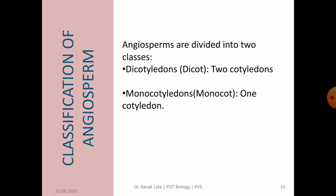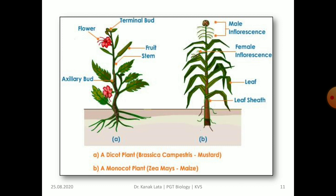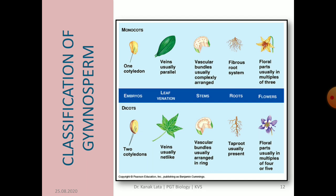Now it is about classification of angiosperms. Angiosperms are divided into two classes: dicotyledons, also called dicots, and monocotyledons, also called monocots. This classification is based on the number of cotyledons — in monocots it is one cotyledon and in dicots it is two cotyledons. In monocots, veins are usually parallel, vascular bundles are usually completely arranged, fibrous root system is present, and floral parts are usually in multiples of three. Whereas in dicots, there are two cotyledons, veins are net-like or reticulate, vascular bundles are usually arranged in a ring, tap root system is present, and floral parts are usually multiples of four or five.